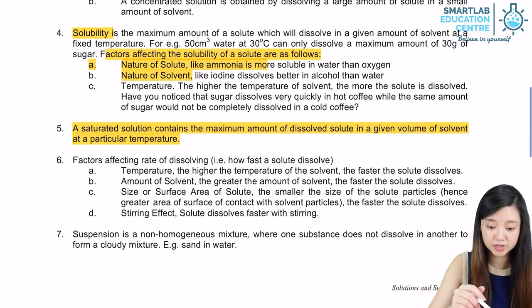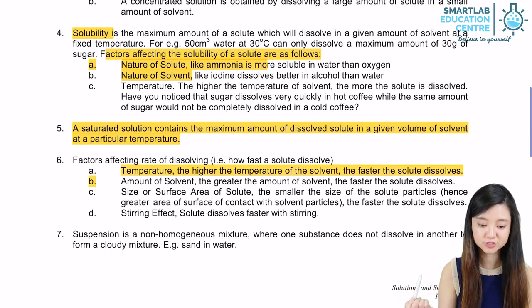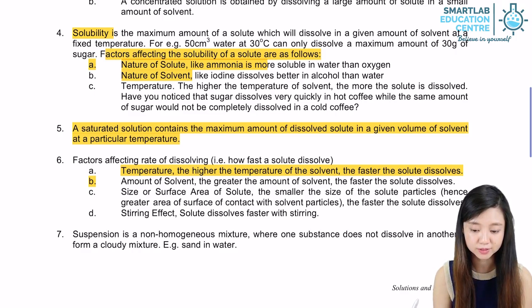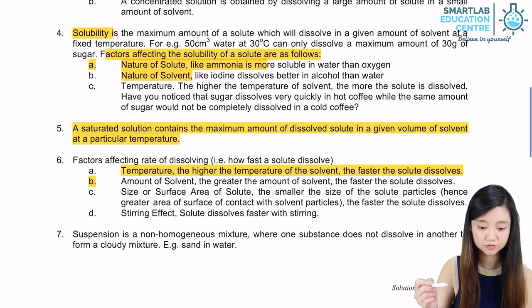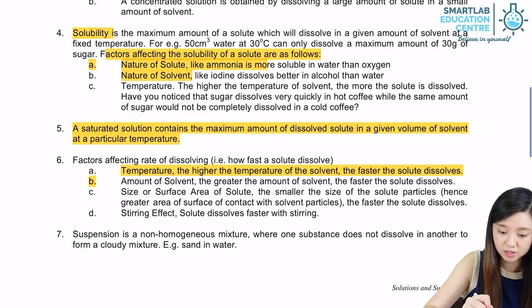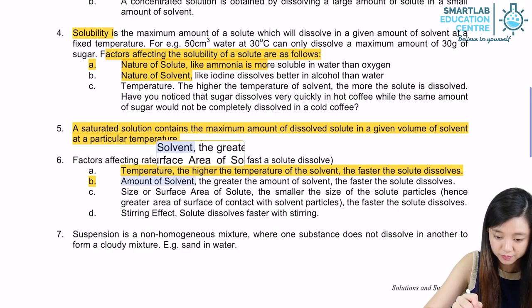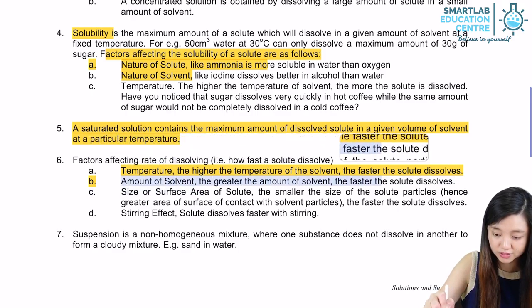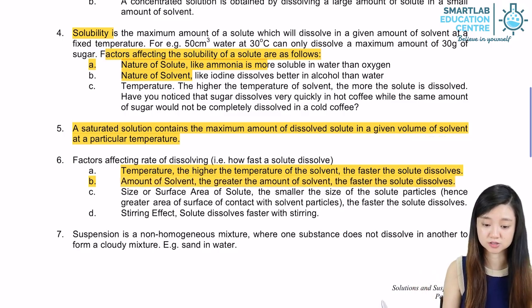The factors that affect the rate of dissolving. The first one is temperature. The higher the temperature of the solvent, the faster the solute will dissolve. The amount of solvent is also important because the greater the amount of solvent, the faster the solute can dissolve.